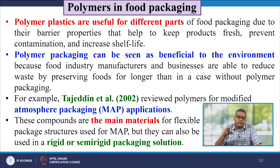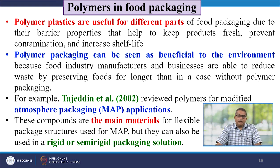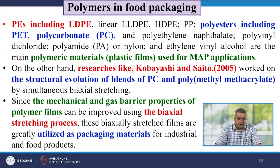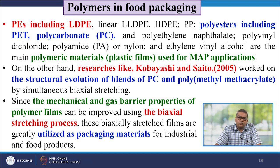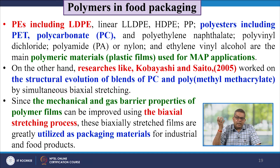Some scientists have reviewed polymers for modified atmosphere packaging (MAP) applications. These compounds are the main material for flexible packing and MAP, but can also be used in rigid or semi-rigid packaging solutions. Polyethylene including LDPE, linear low-density polyethylene, HDPE, polypropylene, polyesters including PET, polycarbonates and polyethylene naphthalate, polyvinyl dichloride, polyamide or nylon, and ethylene polyvinyl alcohol are the main polymeric films used for MAP applications.